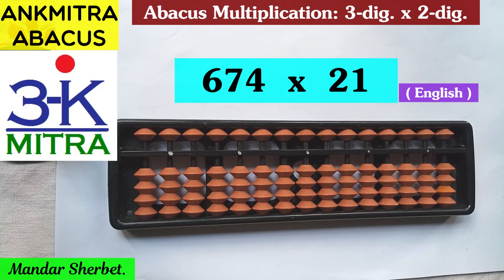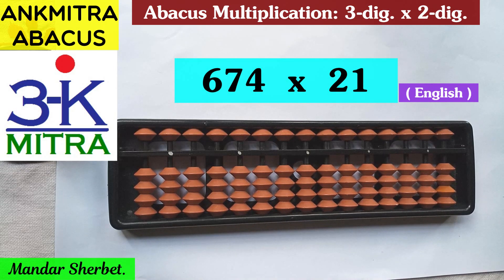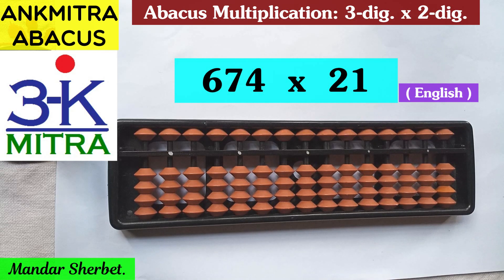Hello everyone. In this video I'll be demonstrating a three-digit number multiplied by two-digit multiplication sum. Previously, whatever multiplication examples or methods I have demonstrated or explained, I have provided the link of all those videos in the description below. In case of any difficulty with any previous multiplication procedures, please have a look at that link. In this video we'll focus on the example 674 multiplied by 21.